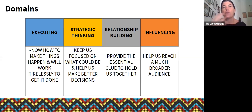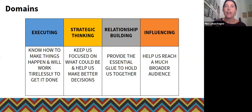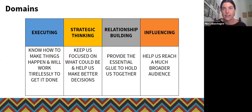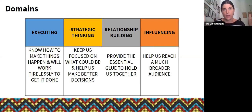I'll send this to you all after the session, but just to recap the four different domains: the 34 themes are divided into four domains. I've tried to color-map your grid so you can get a visual feel of where you're lying — executing, strategic thinking, relationship building, or influencing. Executing is how you make things happen; strategic thinking keeps you focused on what could be; relationship building is the glue holding people together; and influencing helps you reach a bigger audience.